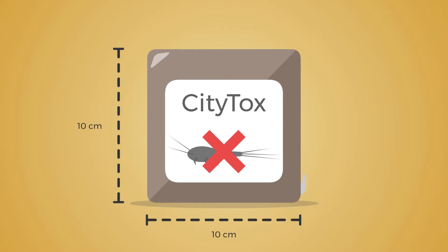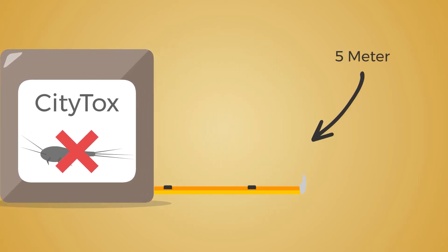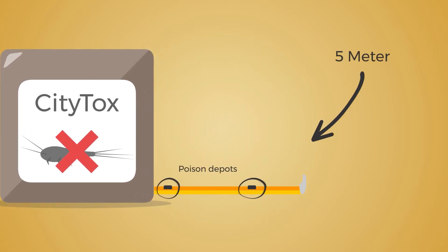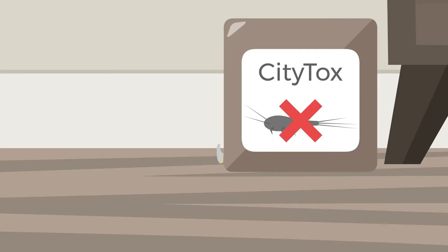The device consists of a box with a rolled up 5 meter long strip fitted with poison depots. The device can be used both rolled up or unrolled.